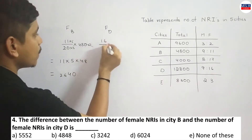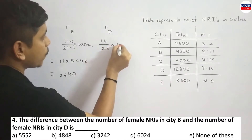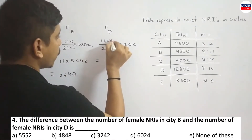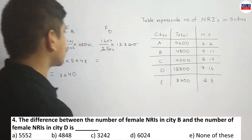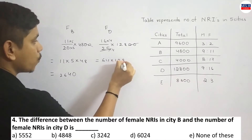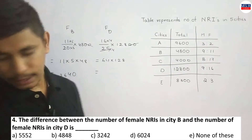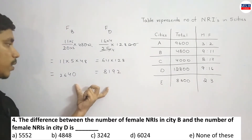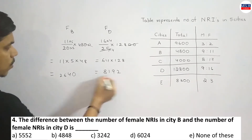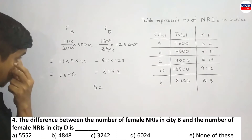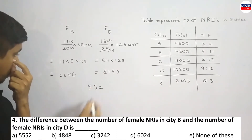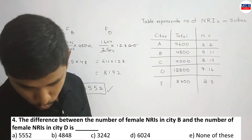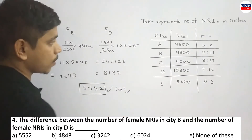City D: 16 out of 25 parts multiplied by 12,800. Double zeros cancel out, giving 64 into 128; after multiplication, female NRIs from city D come to 8192. Finding the difference: 8192 minus 2640. Working through the subtraction — 2, then 5, then 11 minus 6 = 5, then 7 minus 2 = 5 — gives 5552. So 5552 is your answer. Option A is your answer.